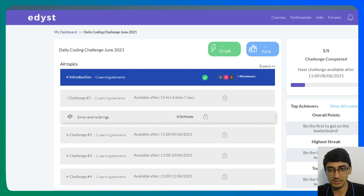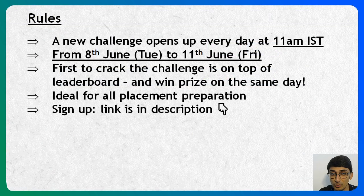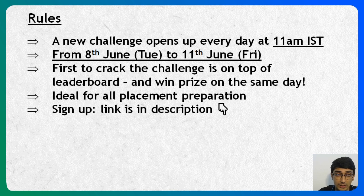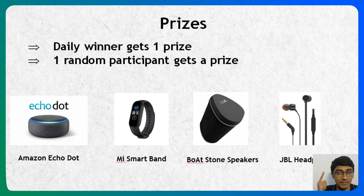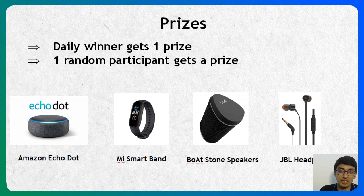So make sure you've signed up. Just click on the link in the description below and it will open up this page for you. When the challenge opens up, attempt it. You might be thinking you're not really that great at programming — even in that case, do attempt it, because the prizes are going to go to one winner for sure, but also one random person who participates. So even if you participated and didn't get the correct answer, one random person also gets a prize. Maybe it's you — you just came in to check out the question and you could also get a prize.